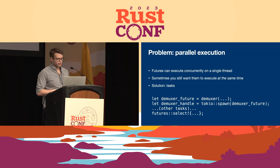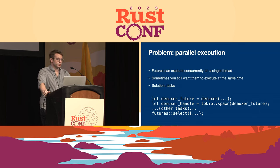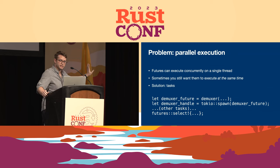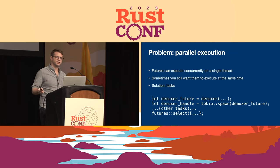This brings us to the next aspect of our system: parallel execution. We want to run different components independently. Futures can execute concurrently on a single thread, but sometimes you want them to execute at the same time. With a multi-threaded runtime like Tokio, you can schedule futures as tasks and run them on separate threads simultaneously. For each component, we create a future and hand it to the tokio::spawn function, which turns it into a task that floats off into the runtime. You get back a handle you can await or cancel. Once all components are spawned, we await all of them using the futures select macro.